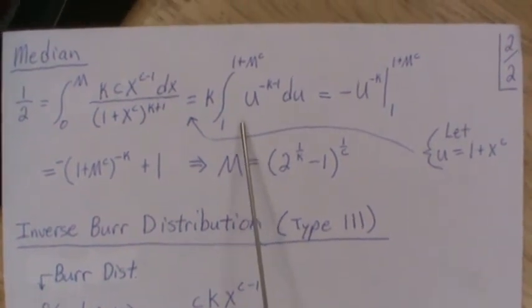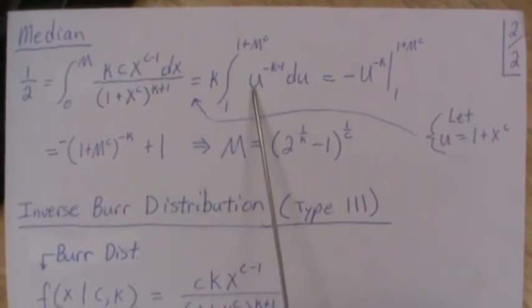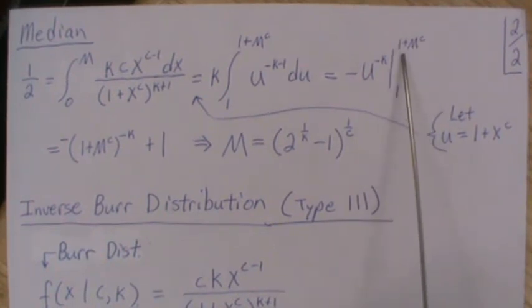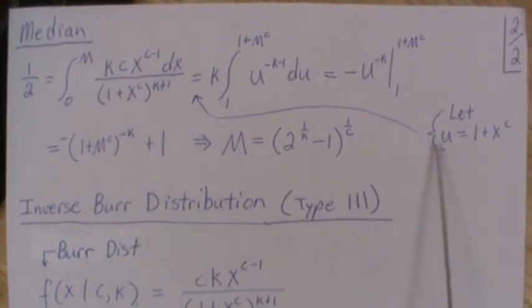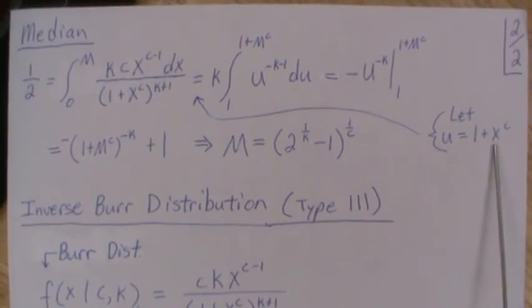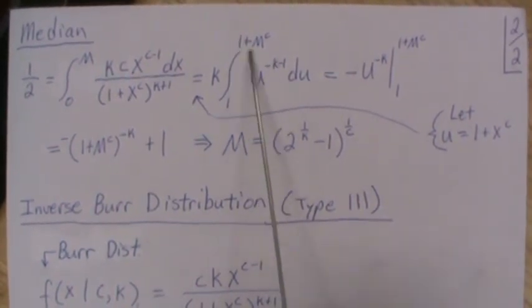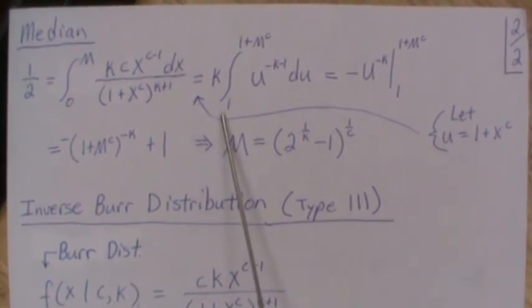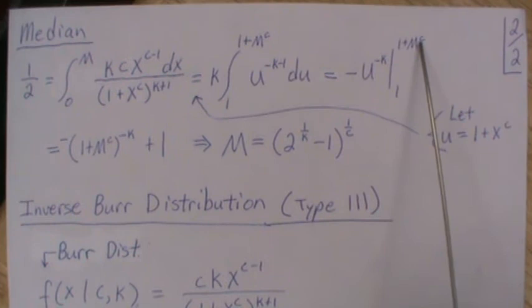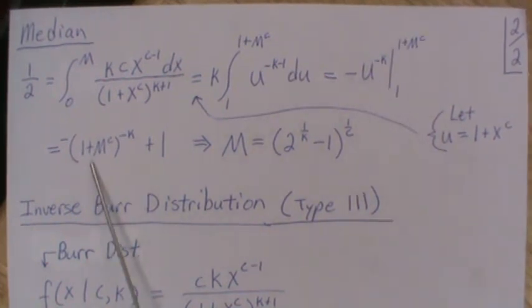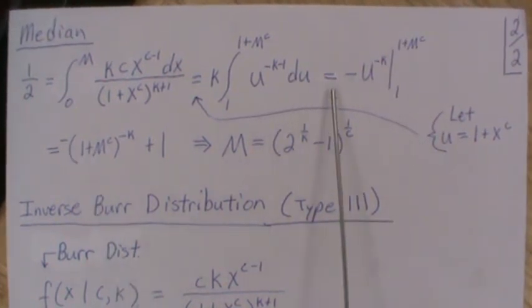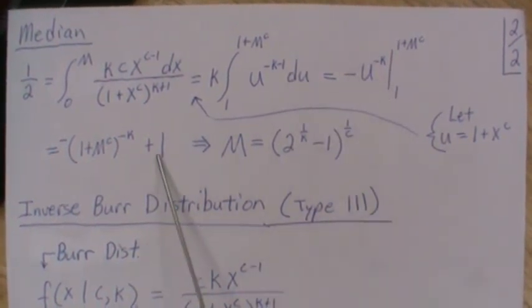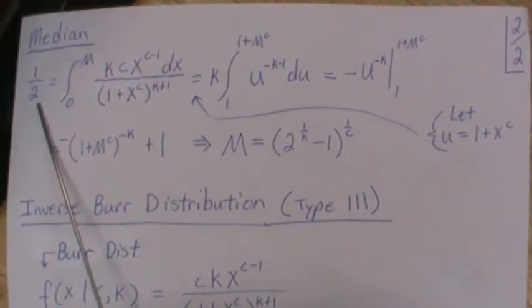And then we integrate that, and we get this. And then we evaluate it at 1. Because m, put in m, you get 1 plus m to the C. That's what goes here. You evaluate at 0, we just get 1. So that's why we're evaluating this. So then you plug in this piece here, and you get this. Don't forget that minus sign. And then it's minus, this minus, which is plus. Plug in 1, you get here. Now, this is equal to 1 half.